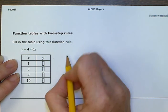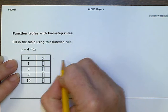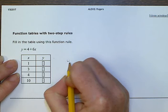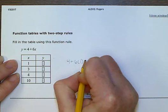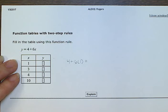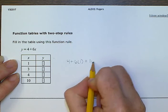So right here when we put in x is 1, we get 4 plus 6 times 1. 6 times 1 is 6, 6 plus 4 is 10, so this answer is 10.